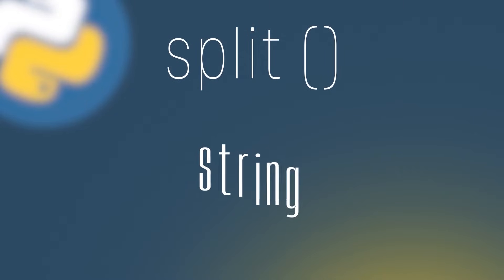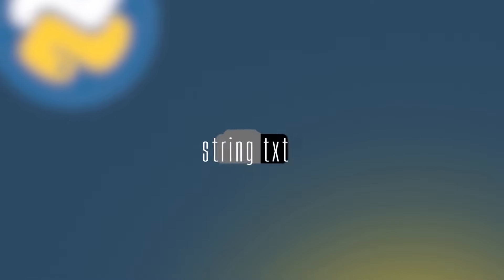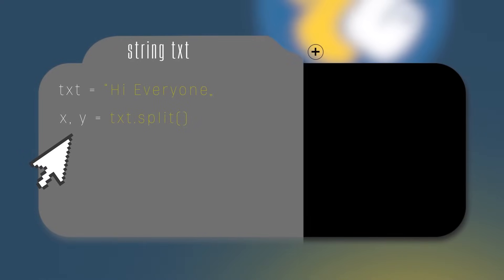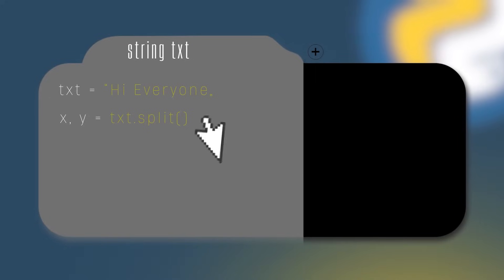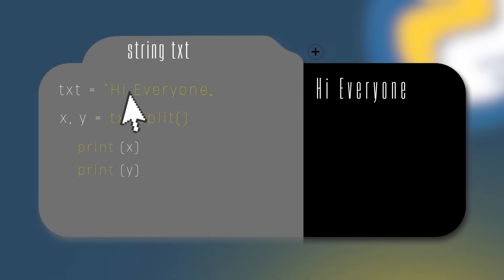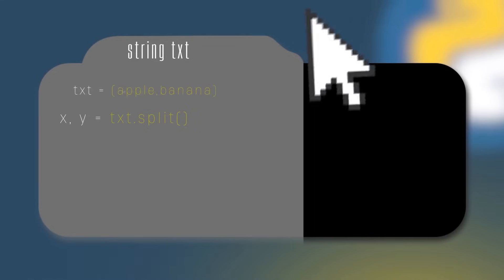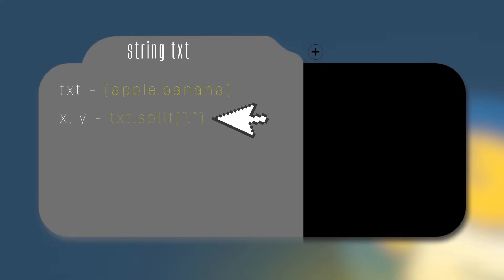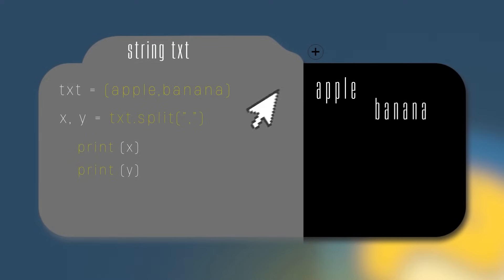The split method splits a string into a list — you can specify the separator, and the default separator is any whitespace. For example, if txt holds 'hi everyone', we do 'x, y = txt.split()' and x will hold 'hi', y will hold 'everyone'. In another case, if txt holds 'apple,banana', we do 'x, y = txt.split(",")' to split by comma — x gets 'apple' and y gets 'banana'.